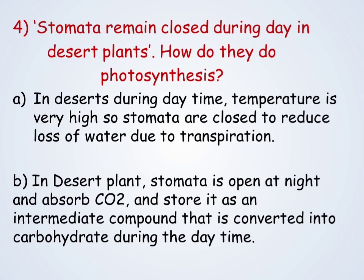Stomata remain closed during daytime in desert plants — then how do they perform photosynthesis? In deserts during daytime, temperature is very high, so stomata are closed to reduce the loss of water due to transpiration. Stomata open at night and absorb carbon dioxide, storing it as an intermediate compound that is converted into carbohydrate during the daytime. This is how they perform photosynthesis.